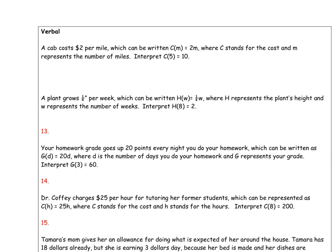Here on the back, these are just some word problems. It says a cab costs $2 per mile, which can be written C of m, so the cost per mile, is equal to 2m, where C stands for the cost and m stands for the miles. Interpret C of 5 equals 10. This means if you ride 5 miles, the cost is $10. That's what that means. If you're going to go 5 miles, the cost is $10.